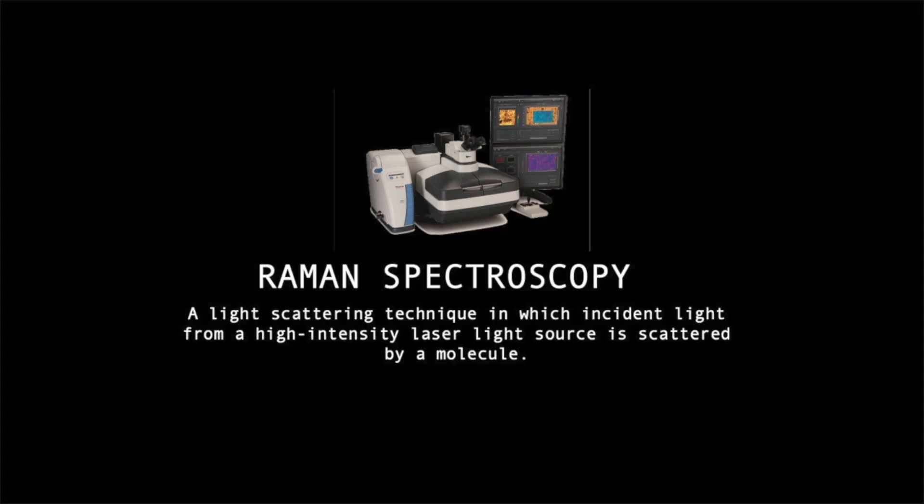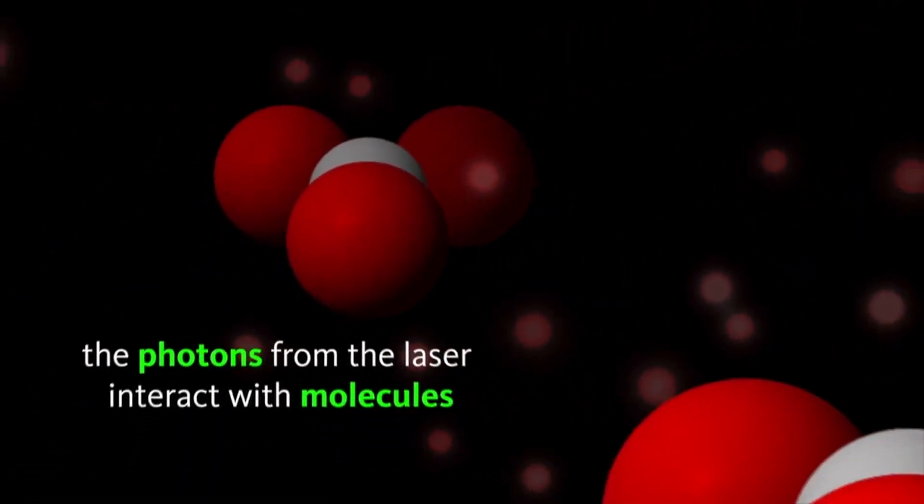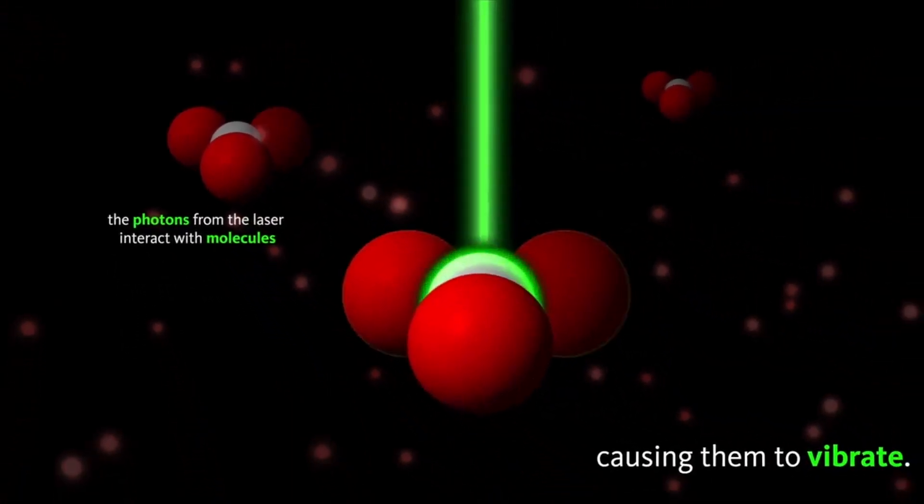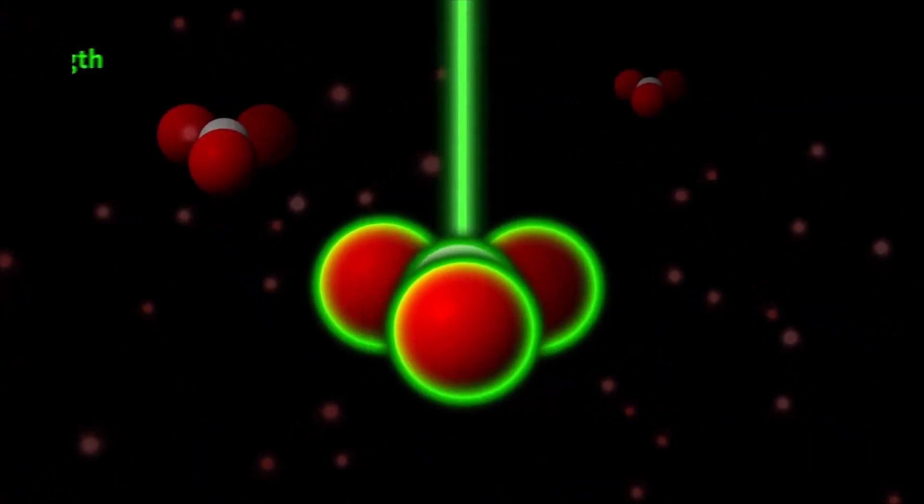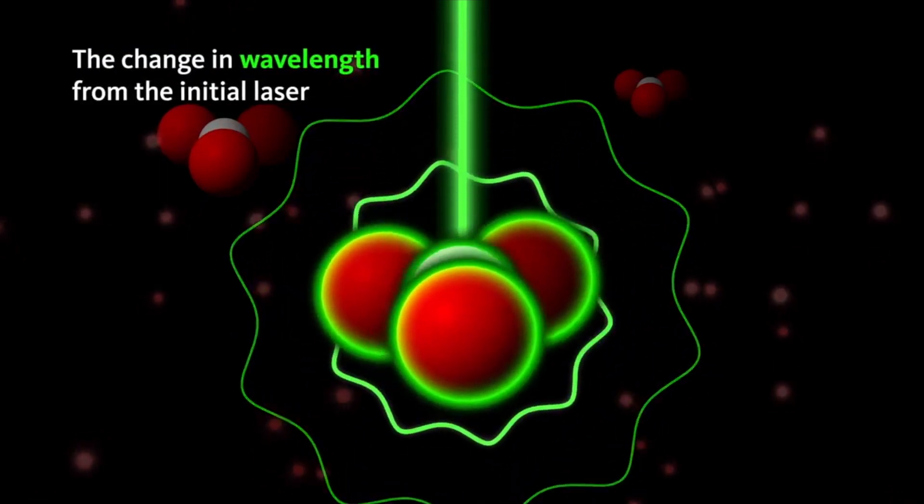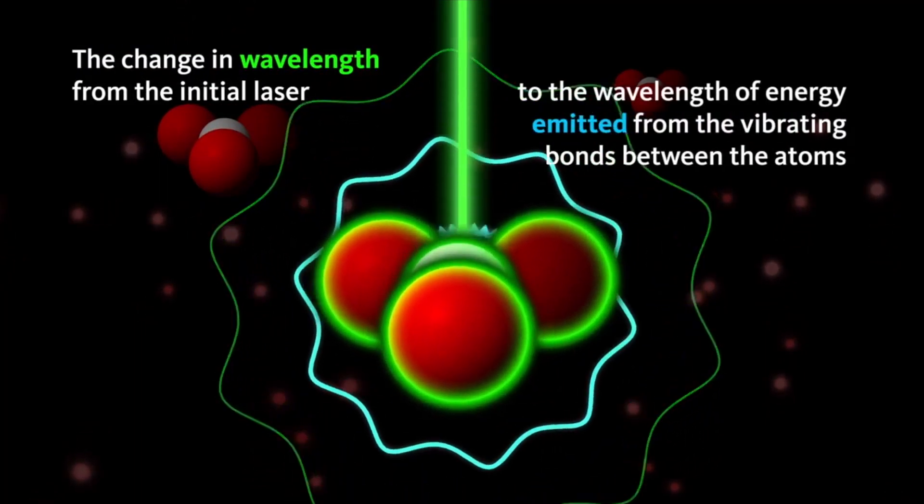The majority of scattered light has the same wavelength or color as the laser source and does not provide useful information. This condition is called Rayleigh scattering.